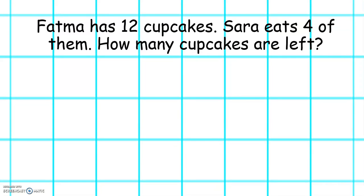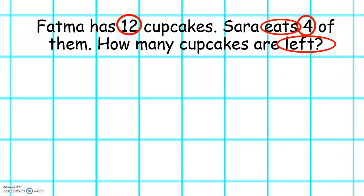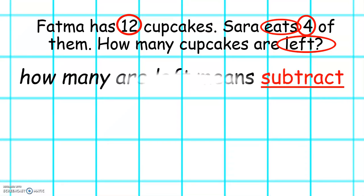Let's read this word problem. Fatima has twelve cupcakes. Sarah eats four of them. How many cupcakes are left? Can you remember the first thing we have to do? That's right, we have to highlight the numbers. The numbers in this word problem are twelve and four. Now we have to look out for the words that tell us whether we have to add or subtract. We can see the word eat, so we know that the number is going to get less because when you eat something you take it away. Also we can see the sentence how many are left. When you see how many are left it means we have to subtract.